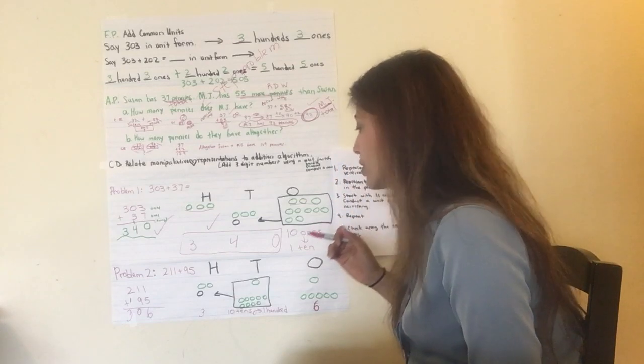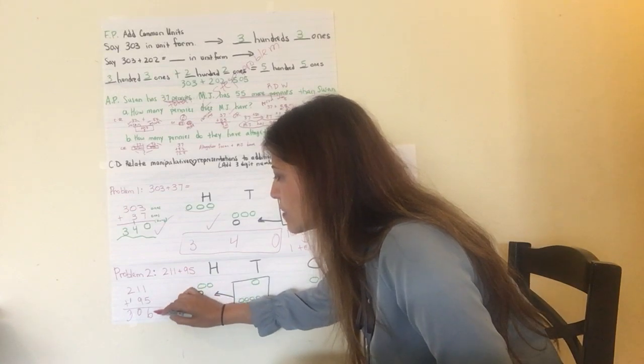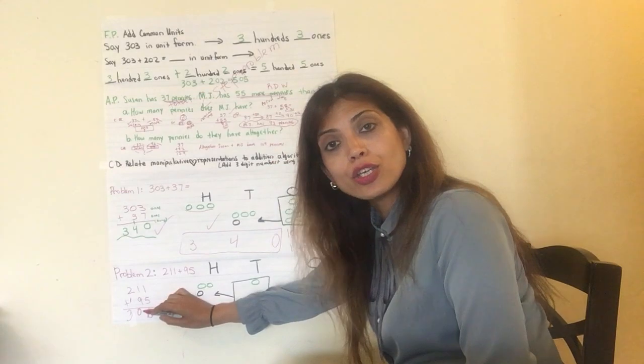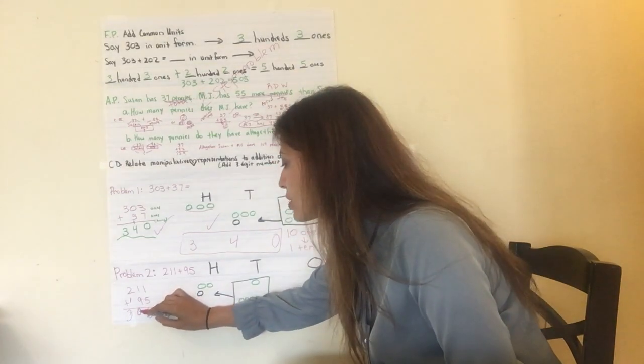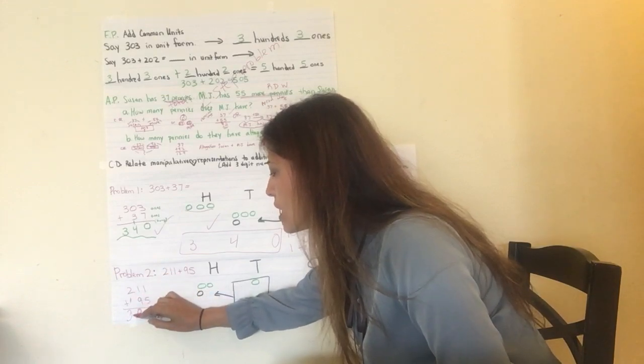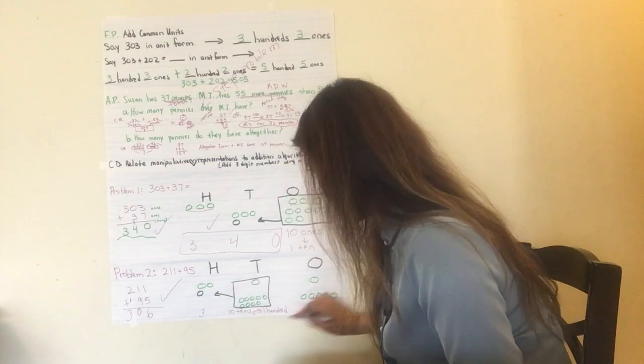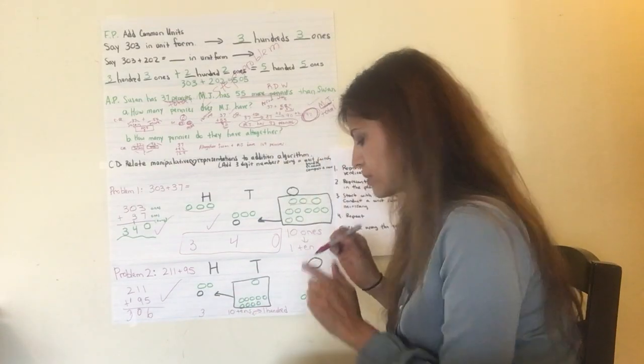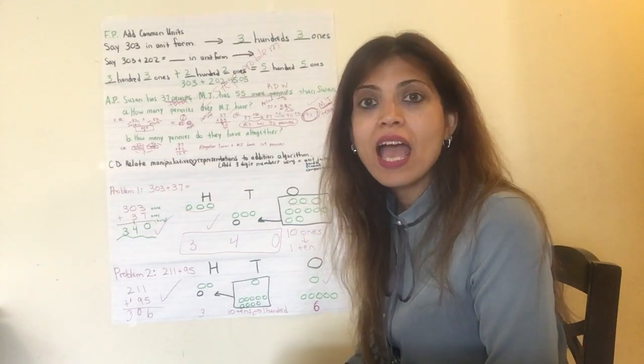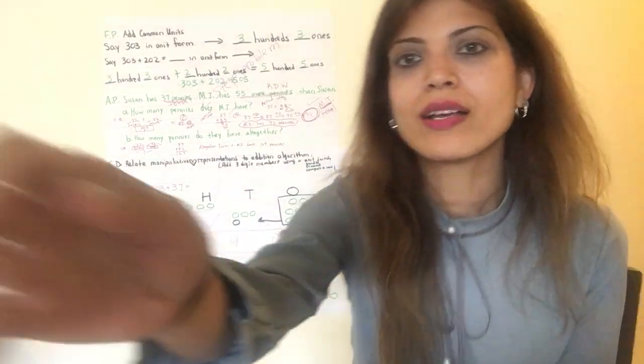Let's check this using the vertical way. 211 plus 95. 1 one plus 5 ones equals 6 ones. 1 ten plus 9 tens equals 10 tens. Alert, alert! Unit switch. So, there you go. You put the 0 there. You take the 100 on the hundreds column. 200 plus 100 equals 300. The answer is 306. Do they match? 306. And the 306 here? Absolutely. I hope this was helpful. I hope this was easy. And I love it. Good, good work, boys and girls. And hope to see you soon. Take care.